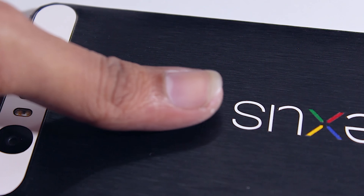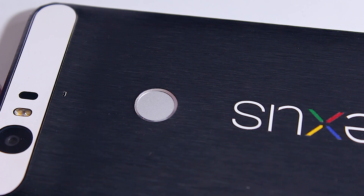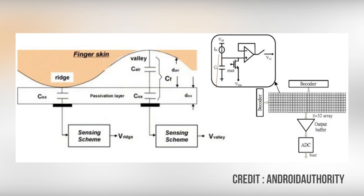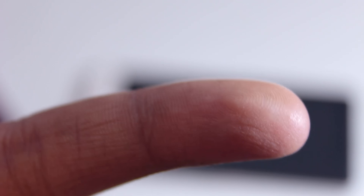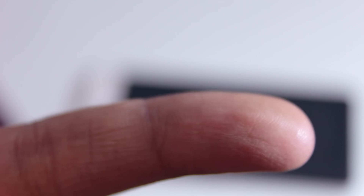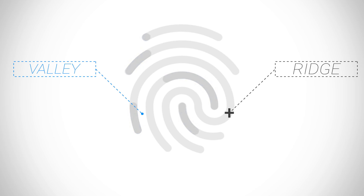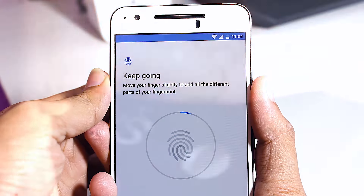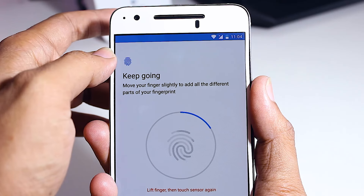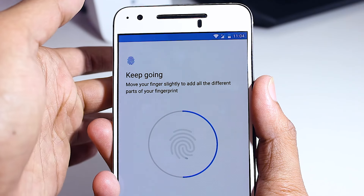These modern capacitive fingerprint scanners take advantage of two facts: the first is the electrically conductive nature of the human body, and the second is the unique uneven pattern of our fingerprints. Our fingerprints are not flat or even patterns — they are uneven with lots of ups and downs. The elevated or upward-facing region is called a ridge, and the depressed or downward-facing region is called a valley. Based on this distinguishing factor between ridges and valleys, capacitive fingerprint scanners distinguish between fingerprints. Every human has a different fingerprint pattern, and the structure of ridges and valleys differs from one person to another. The ridges are the electrically conductive region, while the valleys are not electrically conductive.